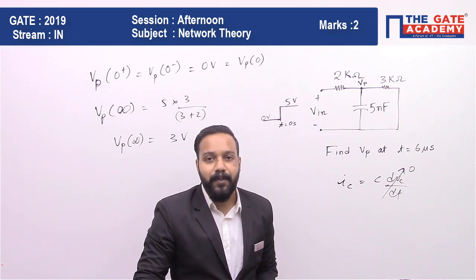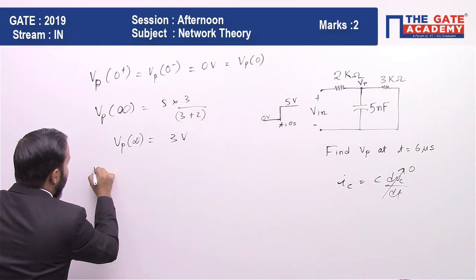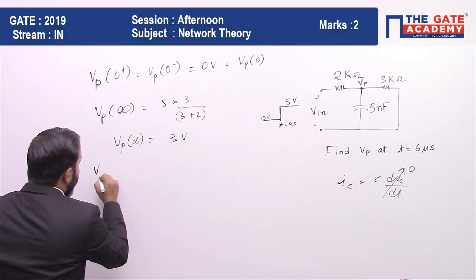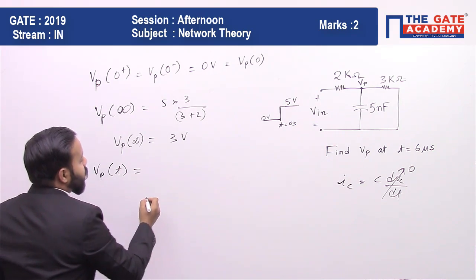Now we will find the expression for the capacitor voltage for time t greater than 0, and then we will put t equals to 6 microseconds to find the answer. So vp(t) equals...